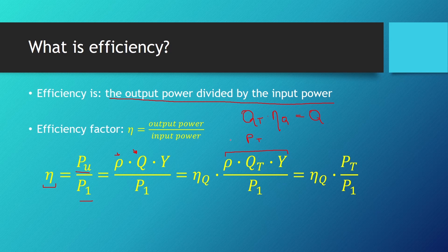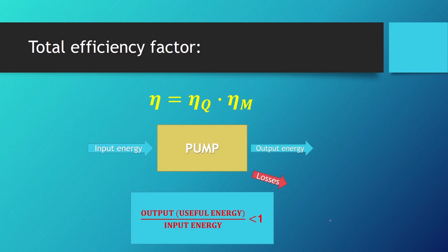If we write this as theoretical power, we have eta_q times theoretical power divided by the input power, and we actually get the mechanical efficiency factor eta_m — because we have the theoretical power used to find the theoretical flow and the input power of the electric motor or IC engine. So we can write the total efficiency factor as eta_q times eta_m: flow efficiency factor times mechanical efficiency factor.